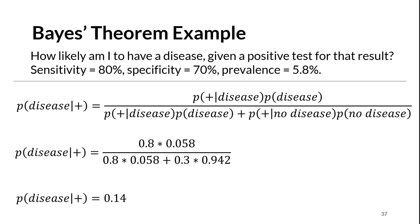In this format the math is straightforward. The numerator is the sensitivity times the prevalence. The denominator is the sum of sensitivity times prevalence plus the false positive rate times the rate of no disease. What we see is that despite a positive test, the probability of having the disease is still quite small, because the overall probability of having the disease in the general population is quite small. Ignoring this small disease prevalence is a phenomenon called the base rate fallacy, and it's important to be aware of.